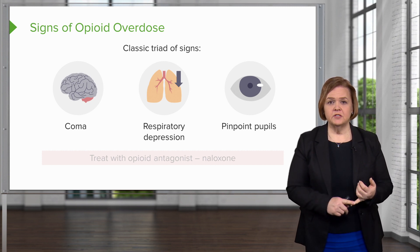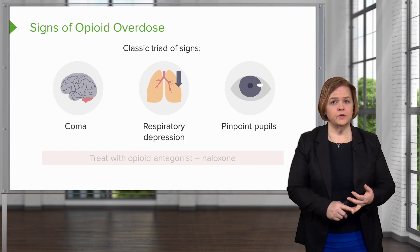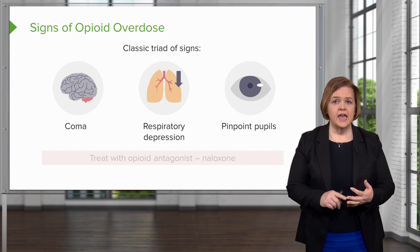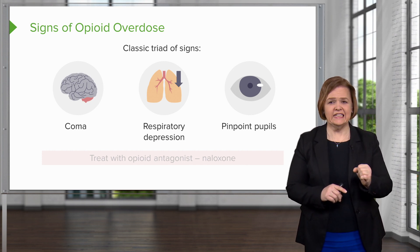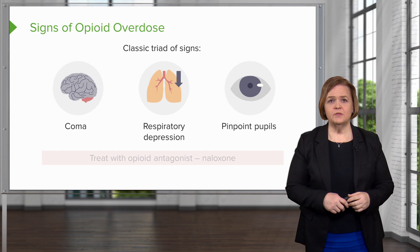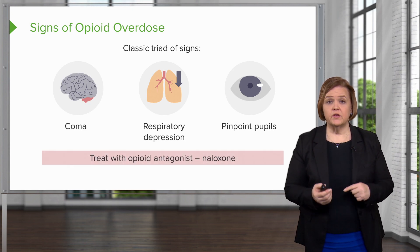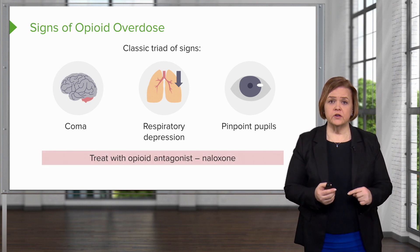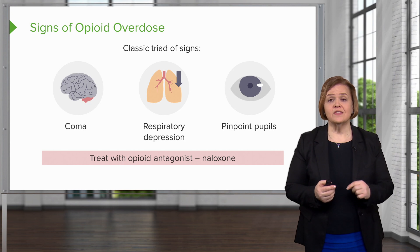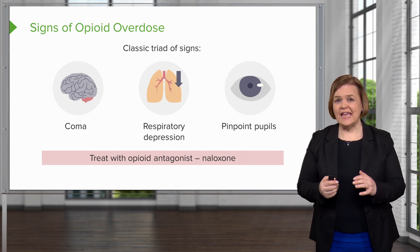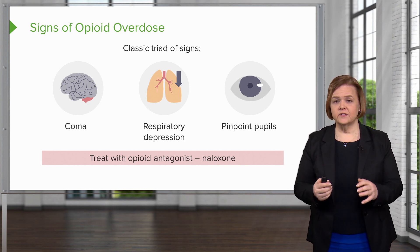If a patient is not responsive, not breathing very quickly — respiratory depression — and their pupils are tiny, then you're going to start thinking about opioid overdose. We can treat this with naloxone because it is an opioid antagonist.